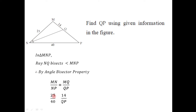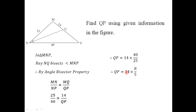The length of MN is 25, NP is 40, and MQ is 14; we need to find QP. Taking QP to the left-hand side gives QP equals 14 multiplied by 40 divided by 25. Dividing numerator and denominator by 5 gives 14 times 8 by 5. Multiplying gives 112 divided by 5, and dividing gives QP equal to 22.4 units. So the length of segment QP is 22.4 units.